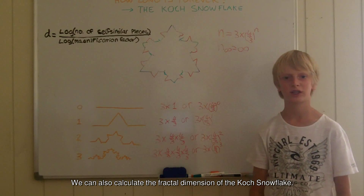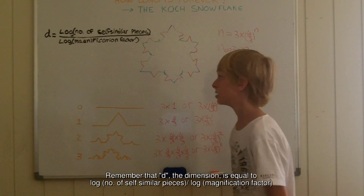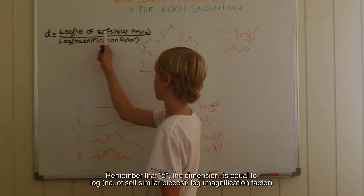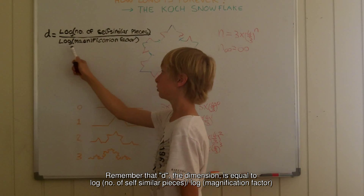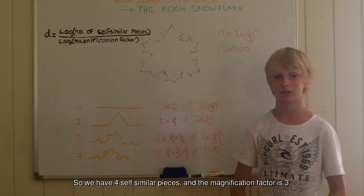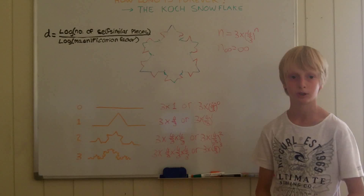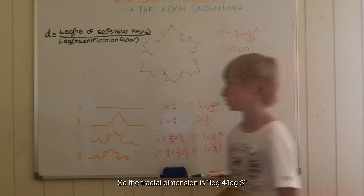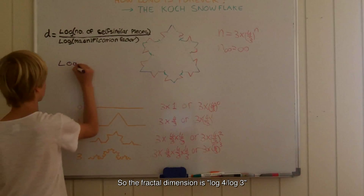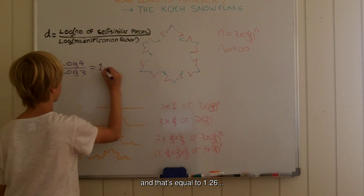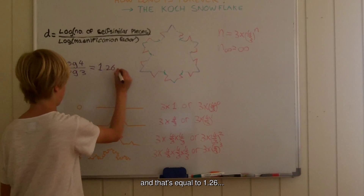We can also calculate the fractal dimension of the Koch snowflake. Remember that d, the dimension, is equal to the log of the number of self-similar pieces divided by the log of the magnification factor. So we have 4 self-similar pieces, and the magnification factor is 3, because we divided the original line segment by 3. So the fractal dimension of the Koch snowflake is log 4 divided by log 3, and that's equal to 1.26.